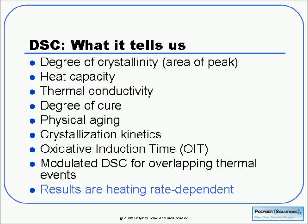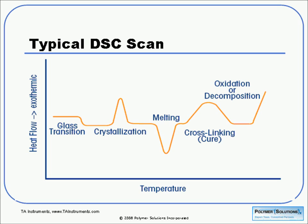DSC can provide a wealth of information. Most commonly it's used to determine Tg and Tm, but it can also give degree of crystallinity, heat capacity, and in some cases thermal conductivity. We can measure how much a sample has cured, determine physical aging, and look at rates of crystallization. We can measure oxidative induction time, related to oxidative stability. A newer technique is modulated DSC, which allows us to separate overlapping thermal events. Results from these techniques are heating-rate dependent, so when comparing data with others, make sure conditions are the same. DSC is truly one of the workhorses in our lab.